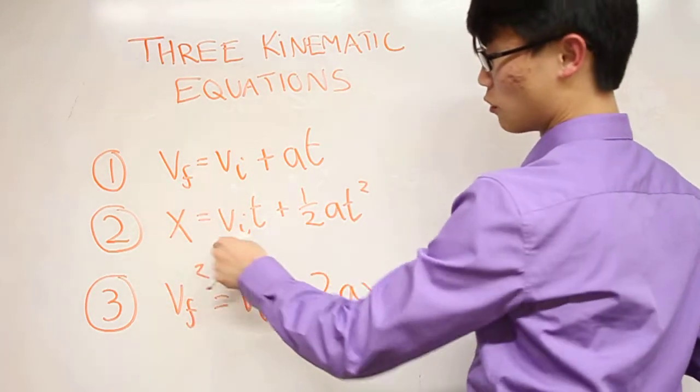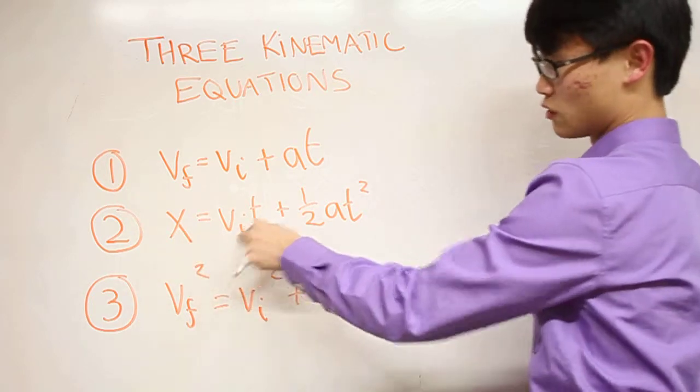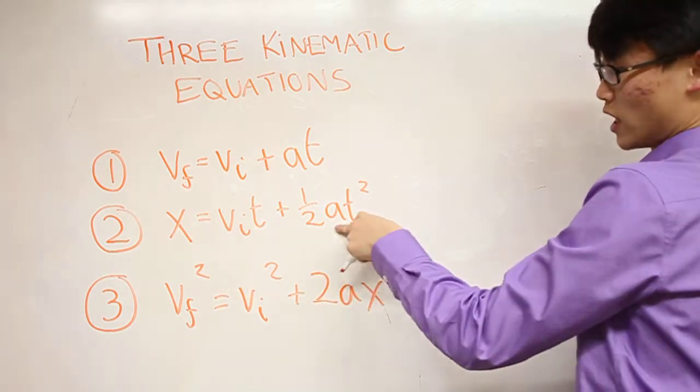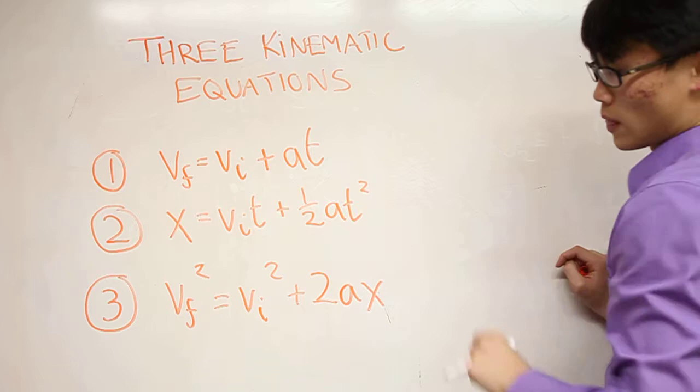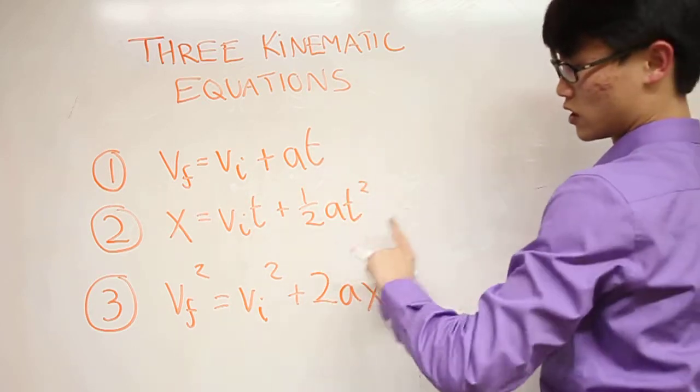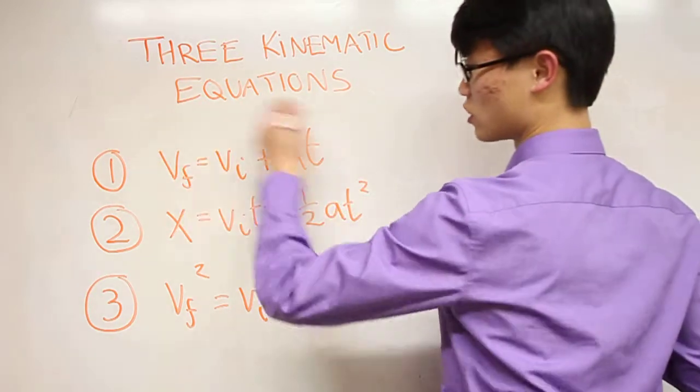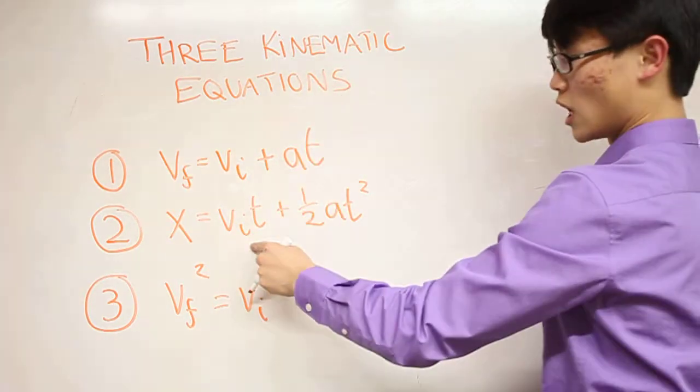For equation 2, x = v_i*t + (1/2)at². You can derive this from the first equation. Think of these as all derivatives of the basic definition of velocity and acceleration.